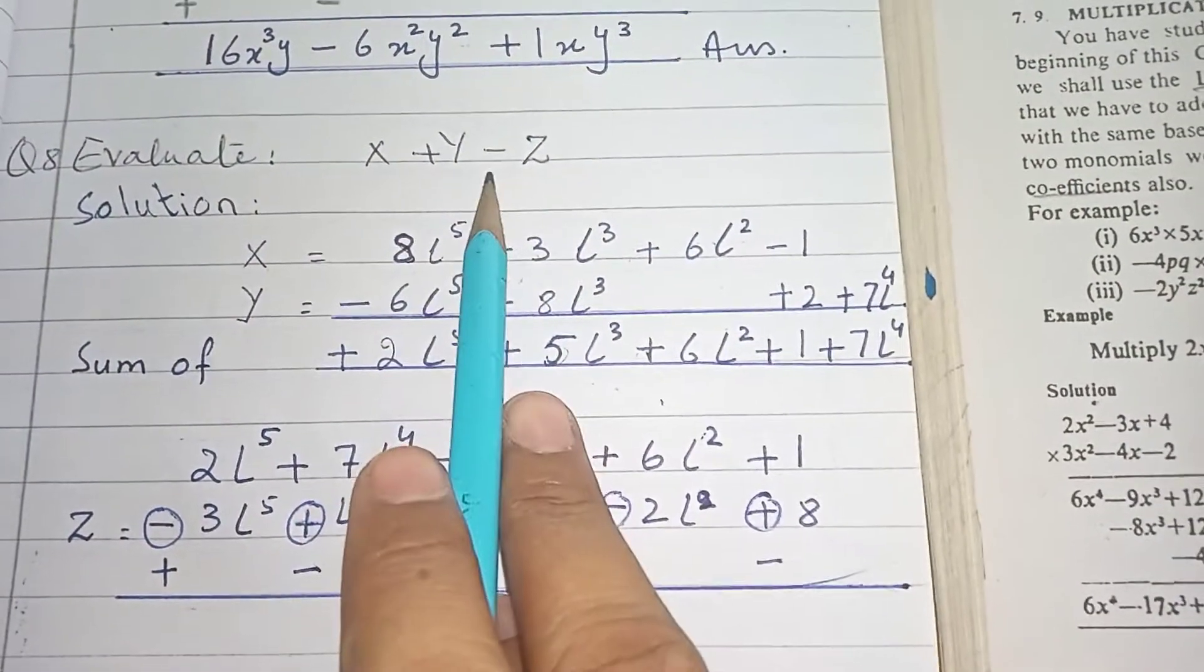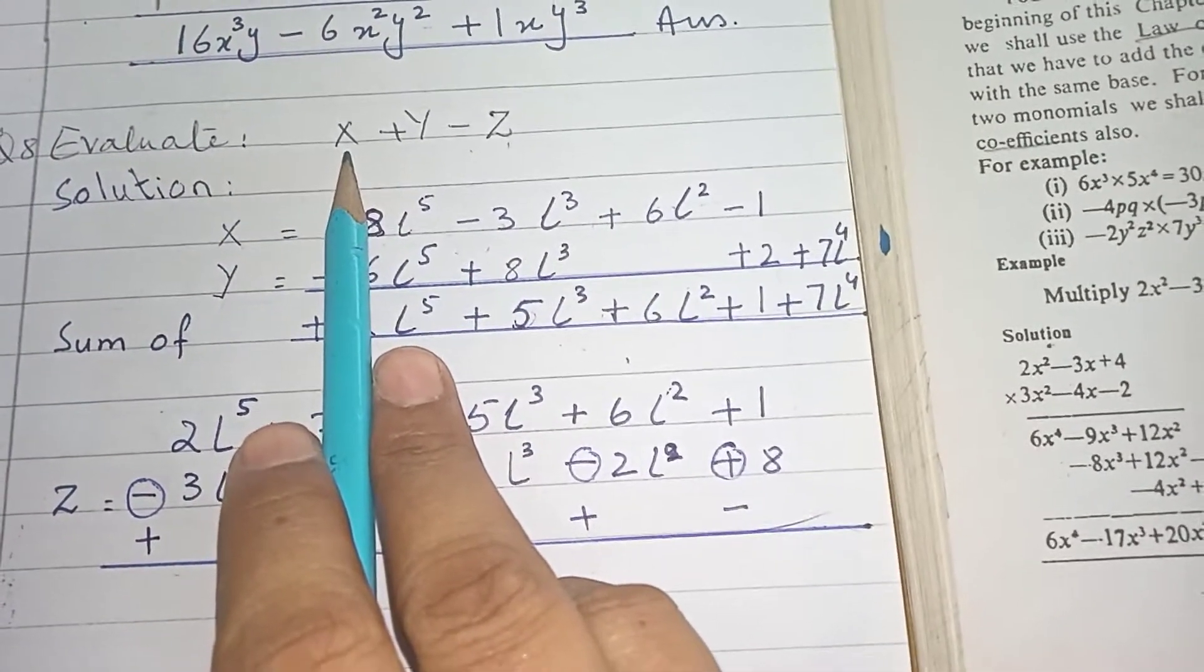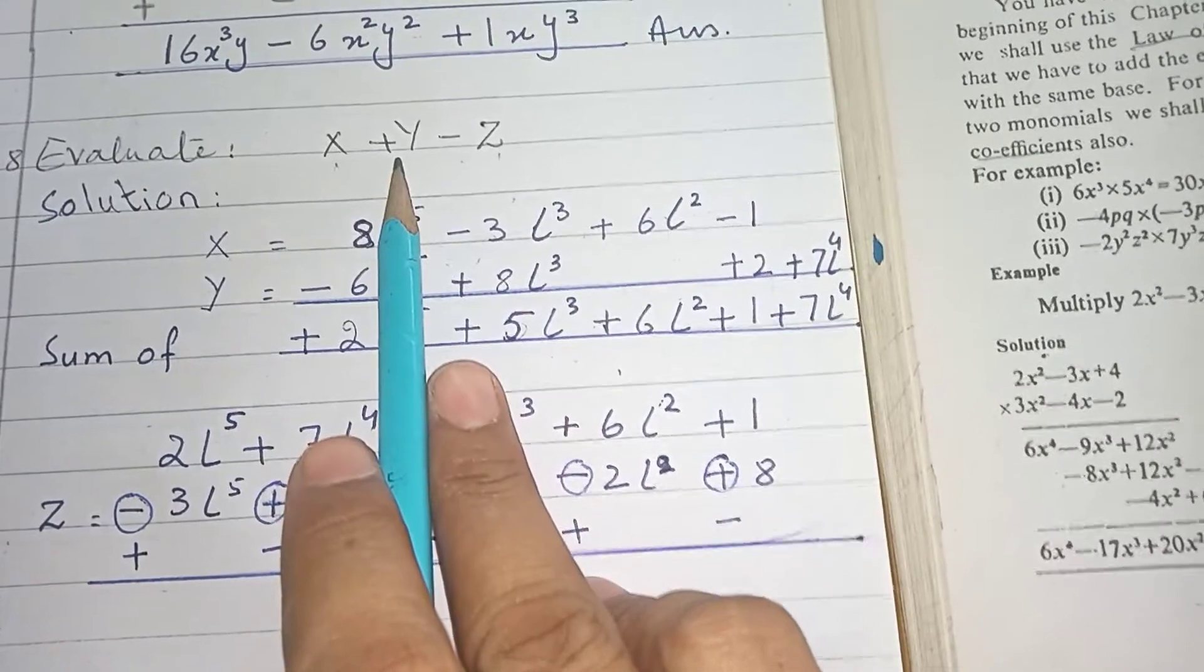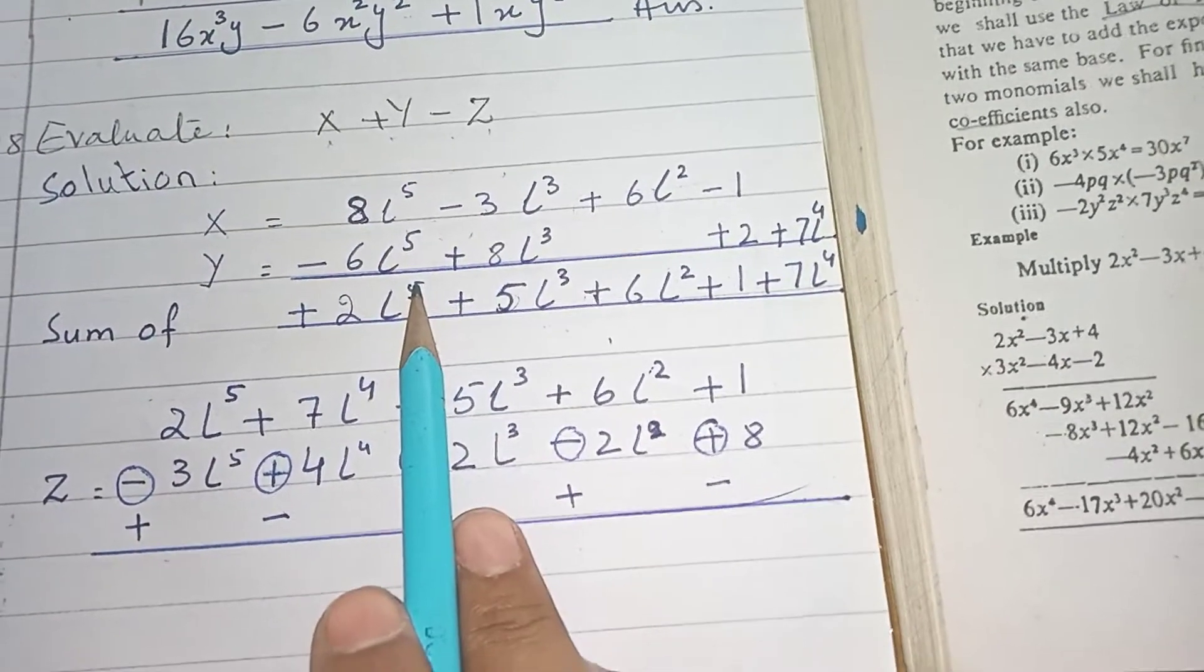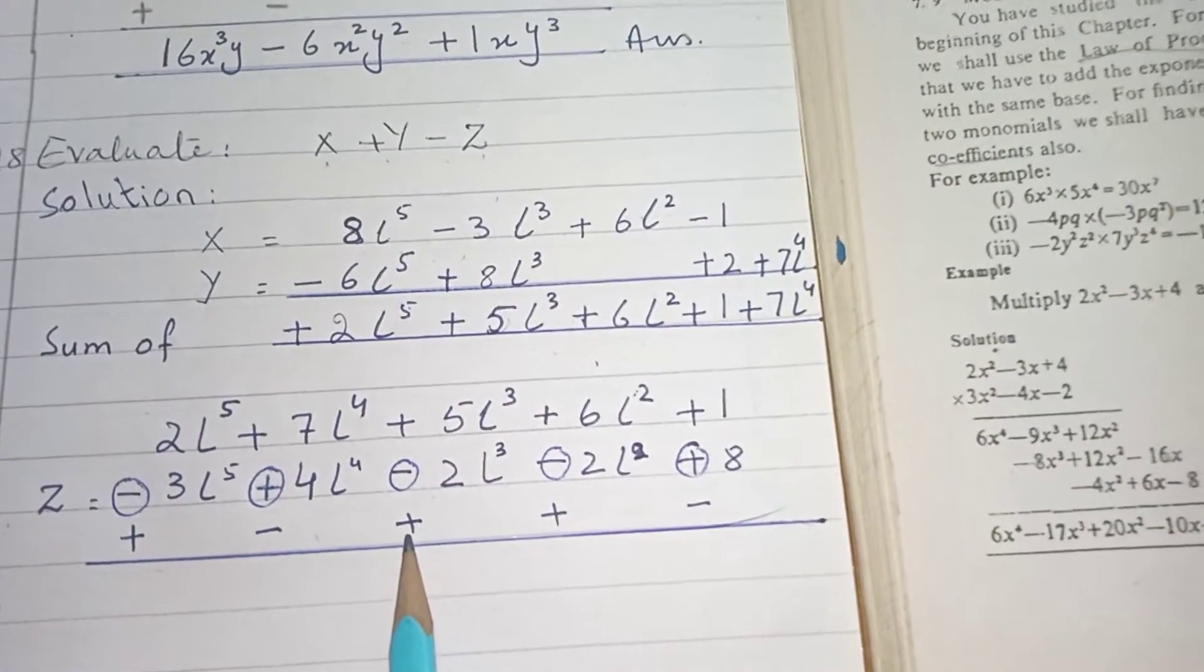X plus Y minus Z. Expression X is given, it means the value of X is given. Value of Y is given. First we add them. After add, we subtract the value of Y.